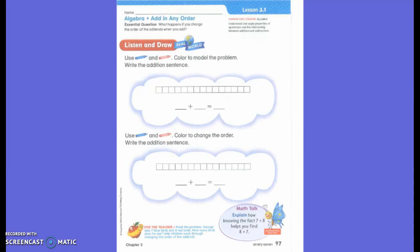George sees seven blue birds. So what should we do first? Color seven. And eight red birds. What should we do next? Color eight red birds.